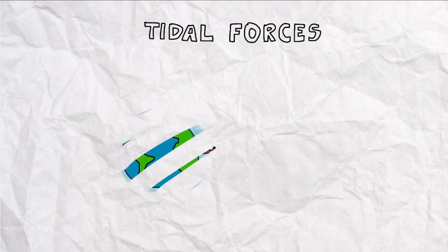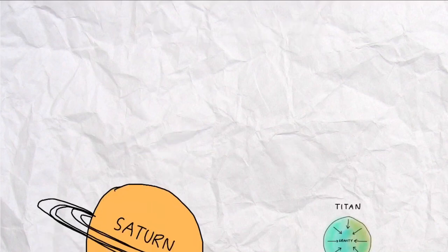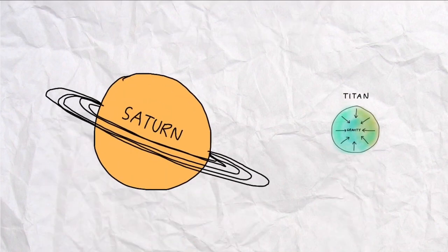Now, going back to Titan, we can label the main influencing forces, namely its own gravitational force on itself and the pull from Saturn, which is different in strength across the two opposite sides of Titan.